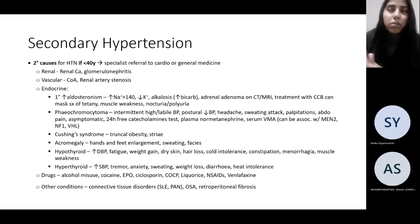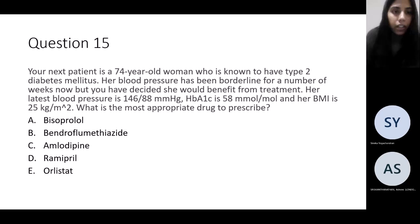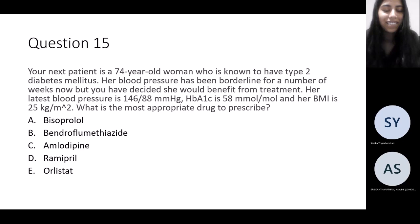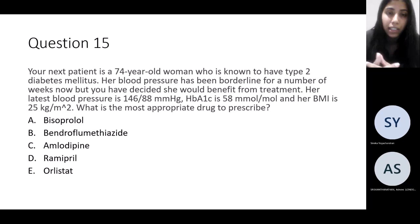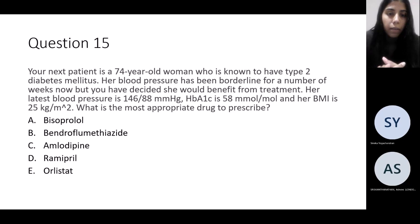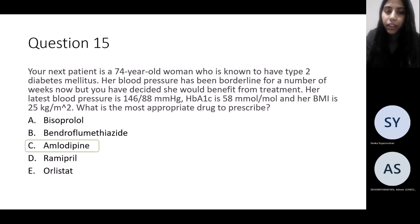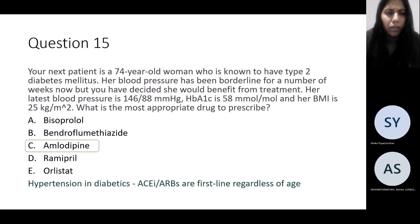Next question: a 74-year-old woman known to have type 2 diabetes with borderline blood pressure, latest reading 146 systolic, HbA1c 58, and slightly raised BMI of 25. What is the most appropriate drug to prescribe? The answer is ramipril — remember that in the hypertension algorithm, diabetes trumps everything, so even though she's 74 and you might automatically think calcium channel blocker, if someone has a known diagnosis of diabetes, start them on an ACE inhibitor regardless of age.